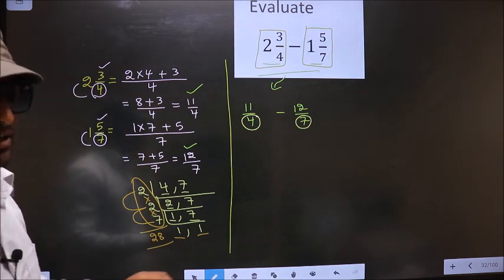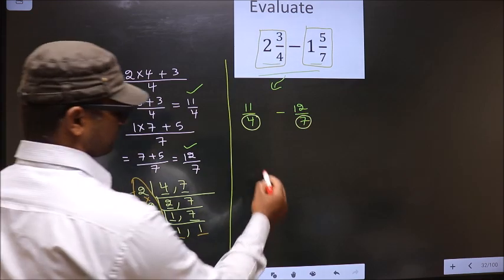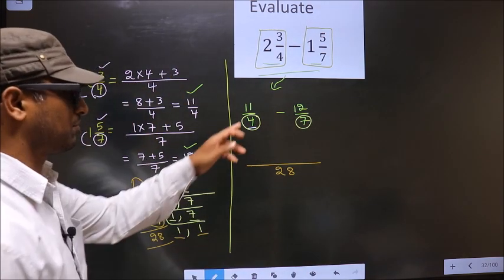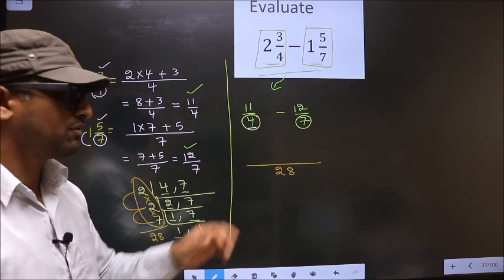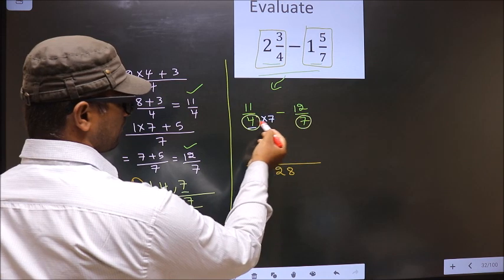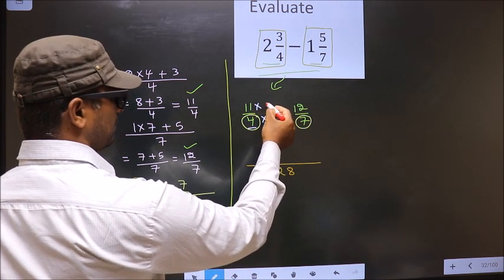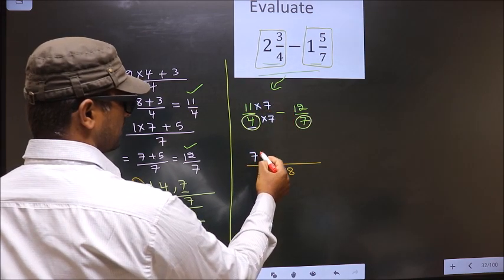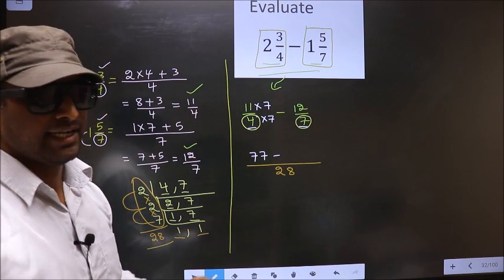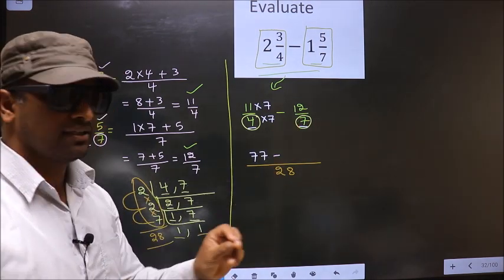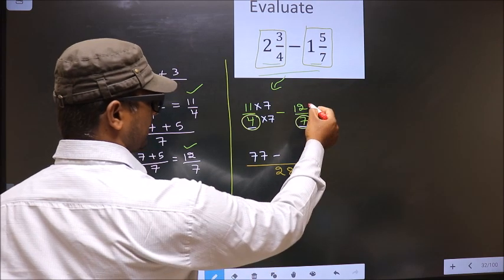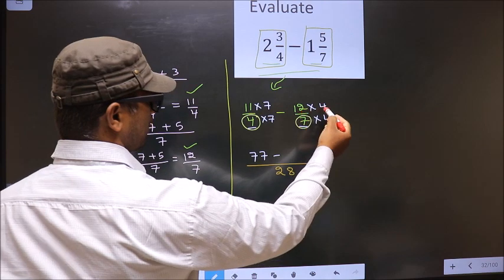Whatever LCM we got, we write it as the common denominator: 28. In the first fraction, the denominator is 4. To change 4 to 28, we multiply by 7. Whatever number you multiply in the denominator, you also multiply the numerator by the same number. So, 11 into 7 is 77. Negative symbol stays as it is. In the second fraction, the denominator is 7. To change 7 to 28, we multiply by 4. So, 12 into 4 is 48.